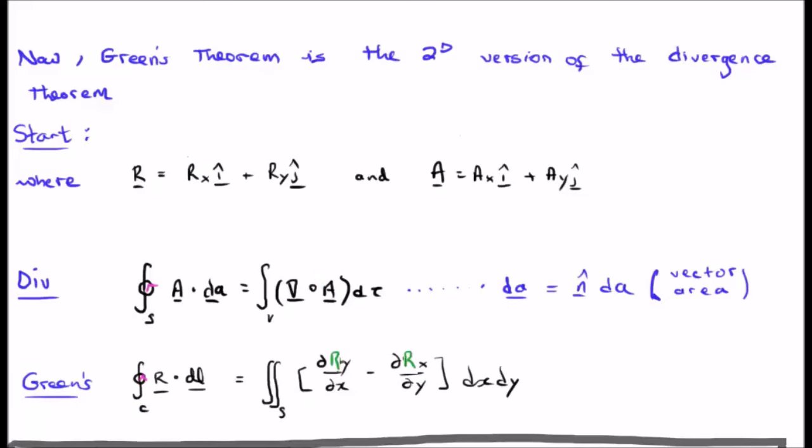If we look at Green's theorem where we take the closed line integral of a vector field capital R with the infinitesimal line segment dl it is equivalent to calculating the surface integral of del R sub y del x minus del R sub x del y.